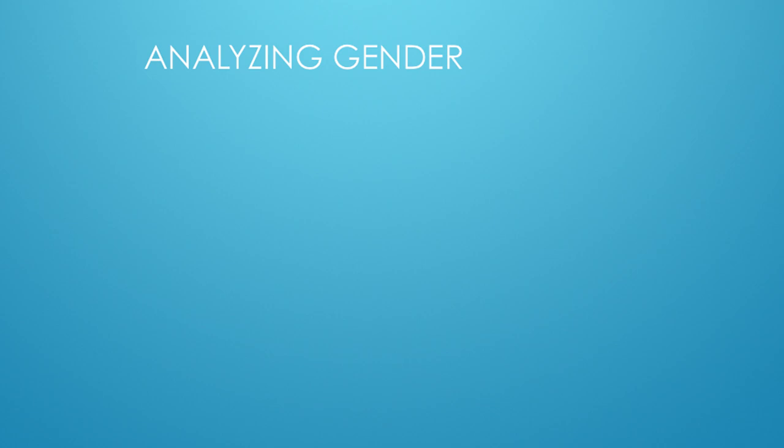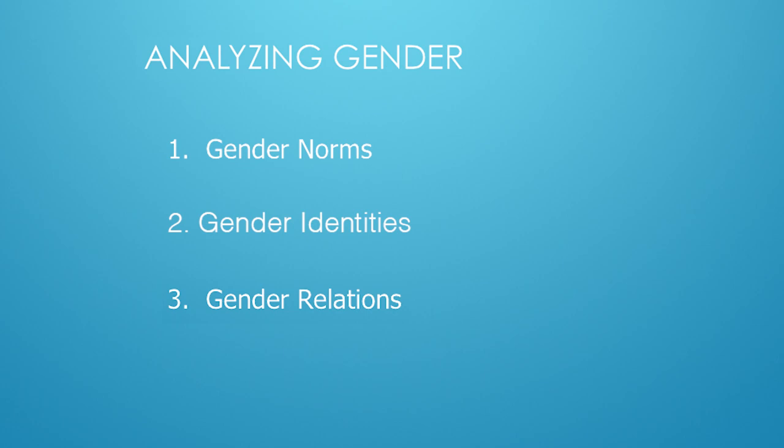Let me say a few more words about gender. Many people think of gender as gender identity. There are at least three aspects of gender that are important to understand: gender norms, gender identities, and gender relations. Gender norms are those unspoken cultural rules that silently police behavior. Gender norms draw upon and reinforce gender stereotypes, which are widely held idealized beliefs about women and men and femininities and masculinities.